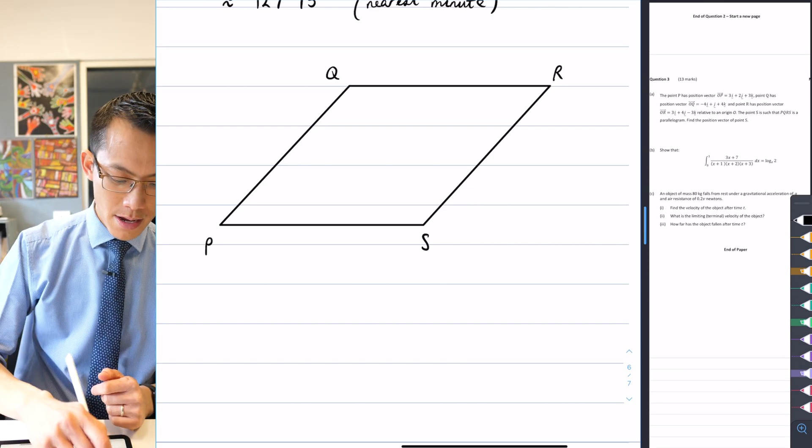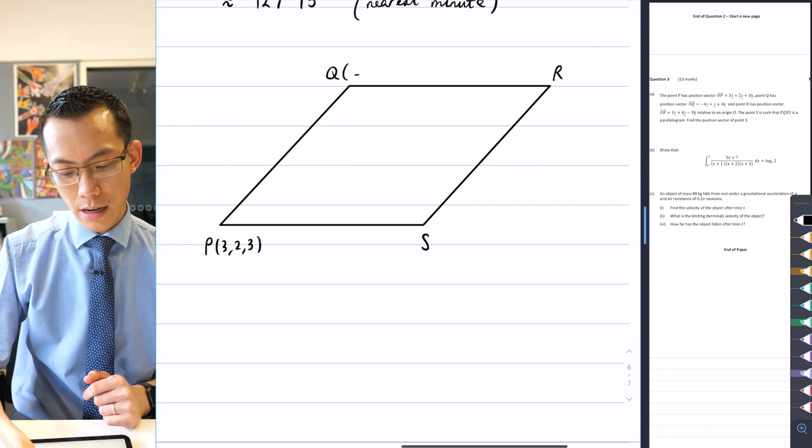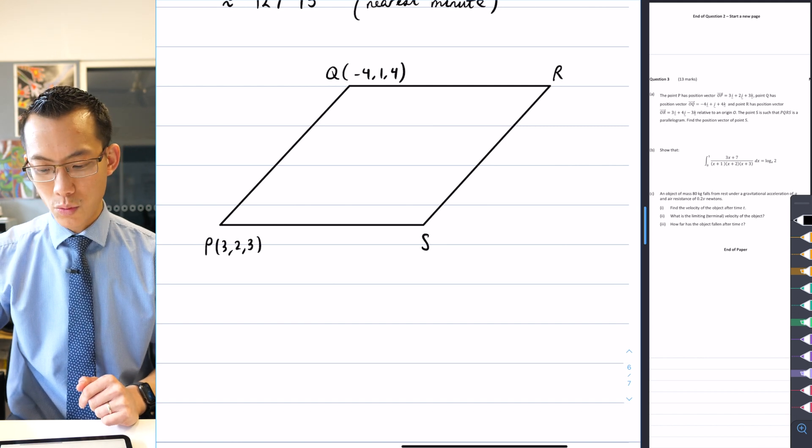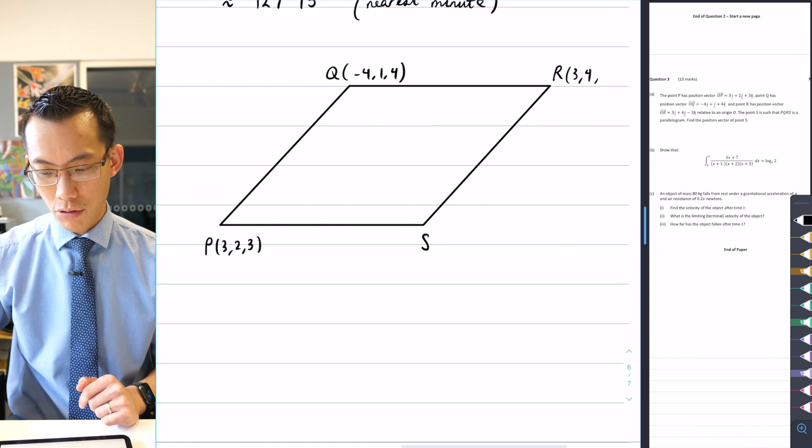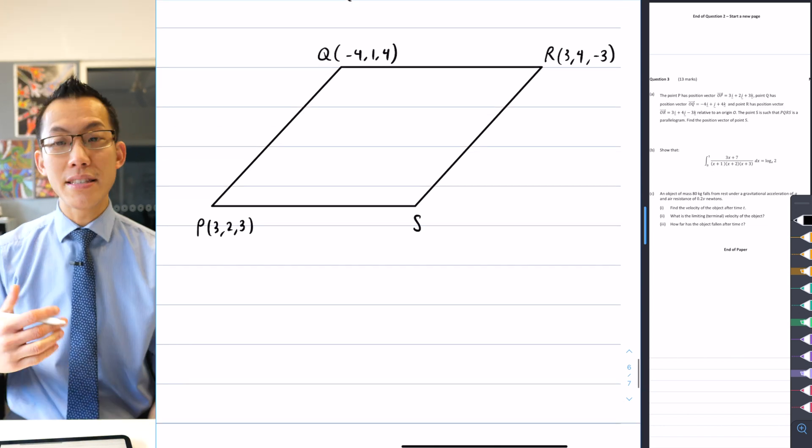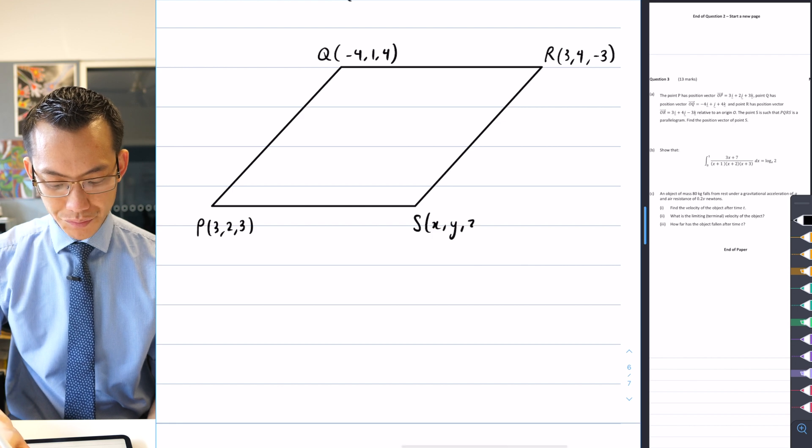P, Q, and R, the coordinates are provided to me. So I know that P is at 3, 2, 3, Q is at negative 4, 1, 4, and R is equal to 3, 4, negative 3. Now S is the unknown. I don't know where it is, so I'm going to call it X, Y, Z.